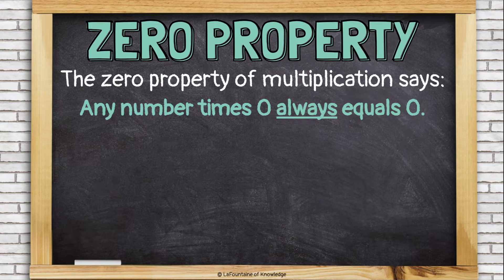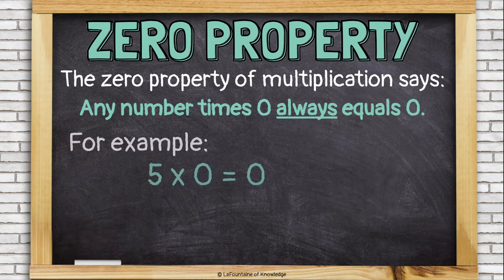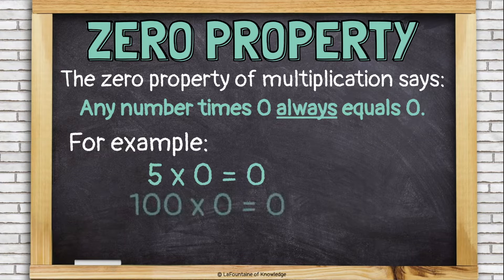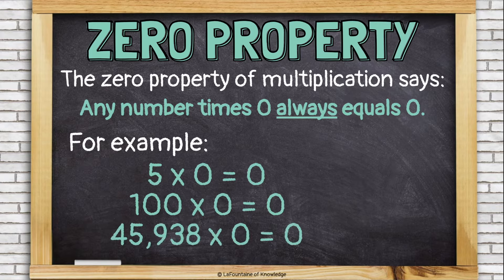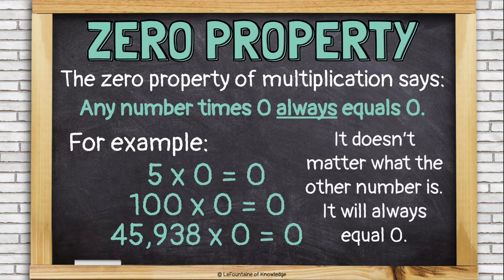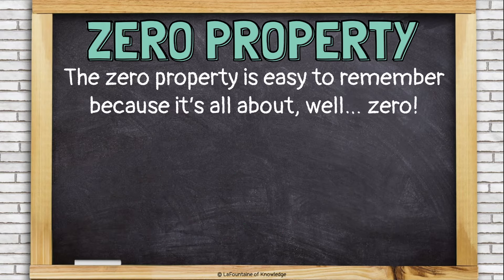The zero property of multiplication says that any number times zero always equals zero. So for example, five times zero equals zero, 100 times zero equals zero, 45,938 times zero equals zero. It doesn't matter what the other number is — it will always equal zero. The zero property is easy to remember because it's all about, well, zero.